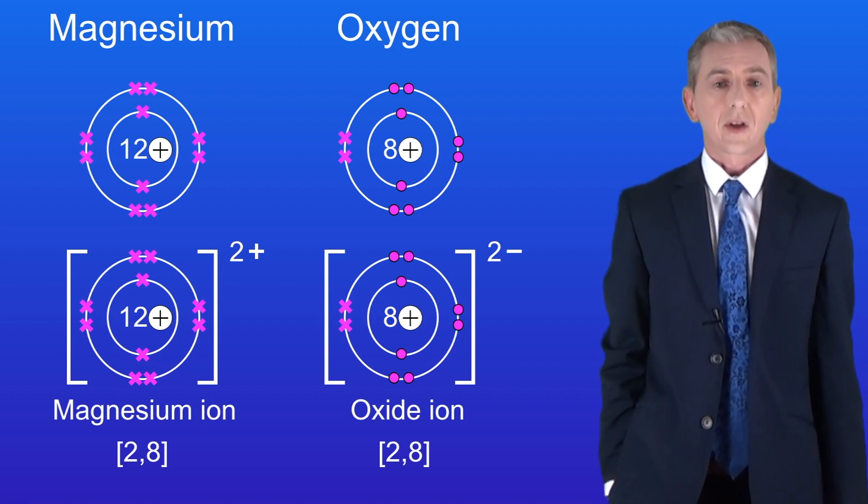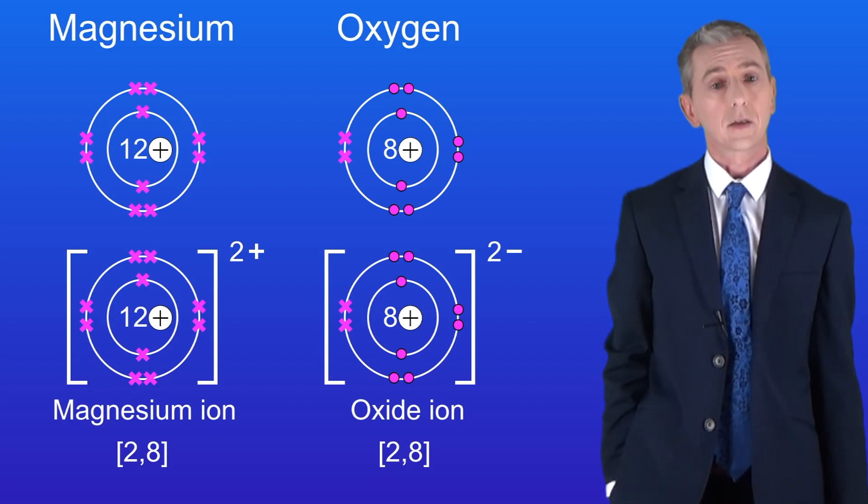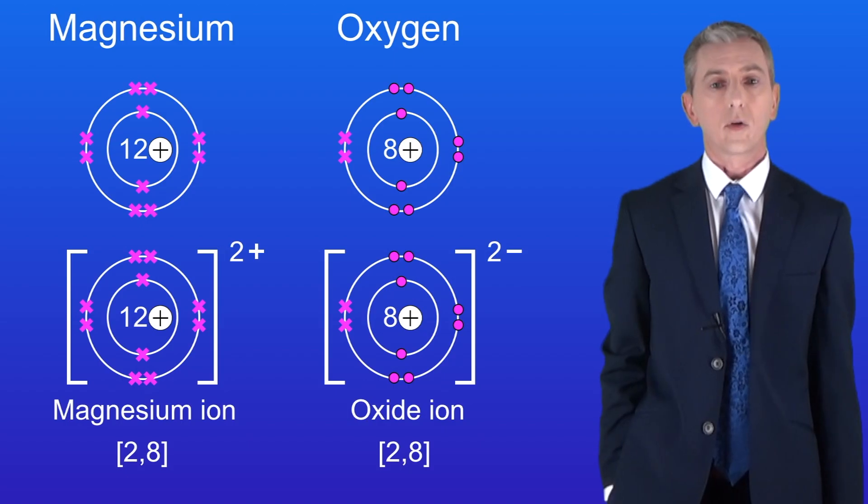The oxygen still has 8 protons but now it's got 10 electrons giving it an overall 2 negative charge. We now call this the oxide ion.